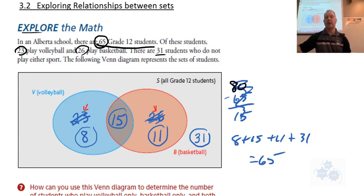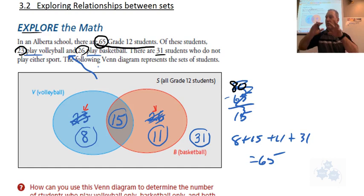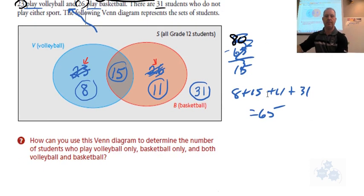From this Venn diagram we can get information that we weren't told about, because we weren't told how many students play both. That's a question that can now be answered. We've separated the data and done some work on this. So now we can answer: who plays volleyball only? 8. How many play basketball only? 11. How many play both? 15. Those are questions we couldn't answer before.